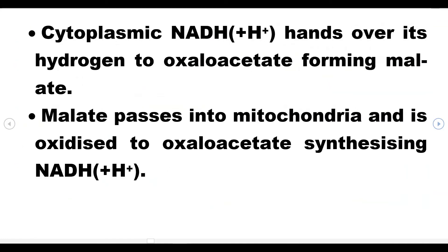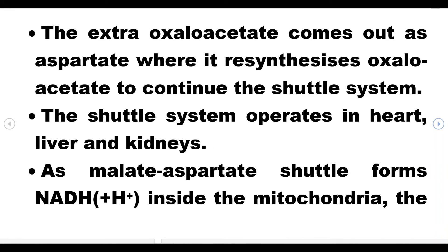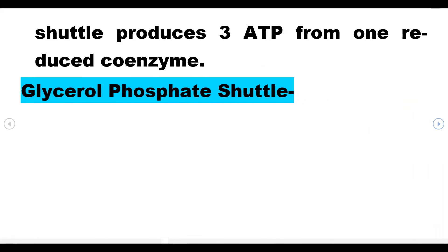Cytoplasmic NADH hands over its hydrogen to oxaloacetate, forming malate. Malate passes into mitochondria and is oxidized to oxaloacetate, synthesizing NADH plus H plus. The extra oxaloacetate comes out as aspartate, where it re-synthesizes oxaloacetate to continue the shuttle system. The shuttle system operates in heart, liver, and kidneys. As malate-aspartate shuttle forms NADH inside the mitochondria, the shuttle produces three ATP from one reduced coenzyme.